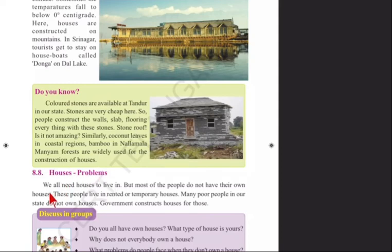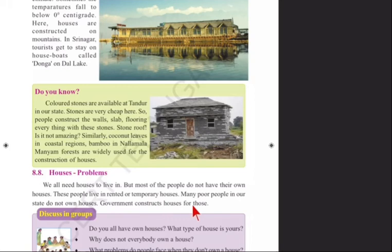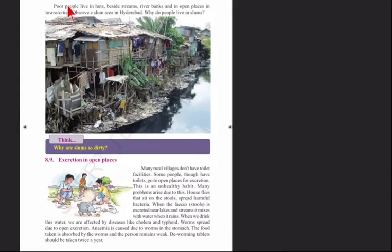Housing problems: We all need houses to live in, but most people do not have their own houses and live in rented or temporary houses. Many poor people in our state do not own houses, and the government constructs houses for them. Poor people live in huts beside streams, rivers, banks, and in open places in towns and cities.